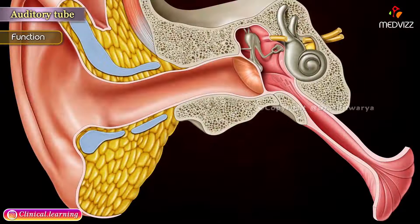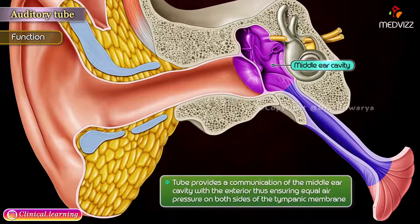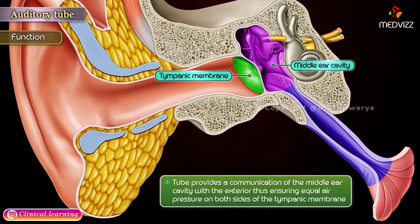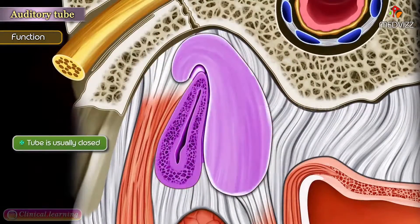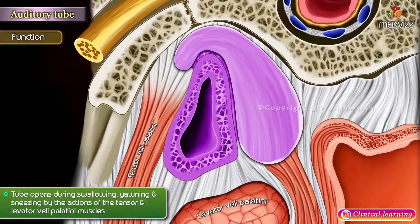Function: The tube provides a communication of the middle ear cavity with the exterior, thus ensuring equal air pressure on both sides of the tympanic membrane. The tube is usually closed, but opens during swallowing, yawning, and sneezing, by the actions of the tensor and levator veli palatini muscles.